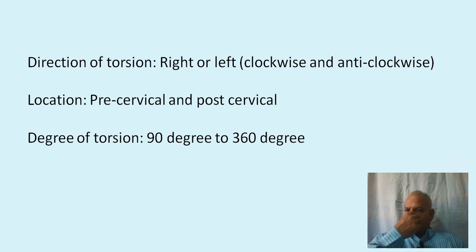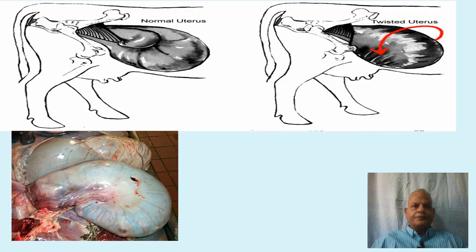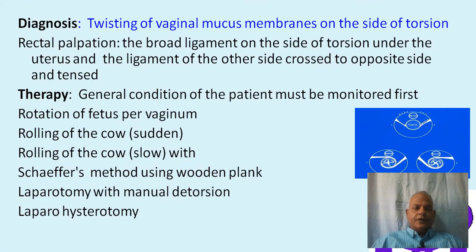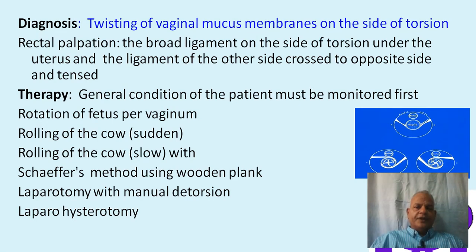Torsions in cattle have been recorded up to 720 degrees. The upper left picture shows a normal uterus, while the second picture shows the twisted uterus. Diagnosis is indicated by twisting of the vaginal mucous membranes on the side of the torsion, but the most appropriate diagnosis is by transrectal palpation. The broad ligaments on the side of the torsion are found under the uterus, while the ligament of the other side crosses to the opposite side and is tensed.